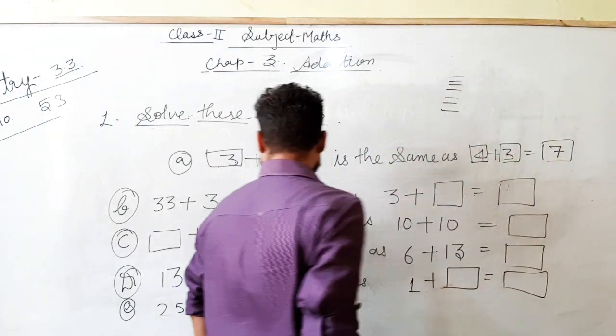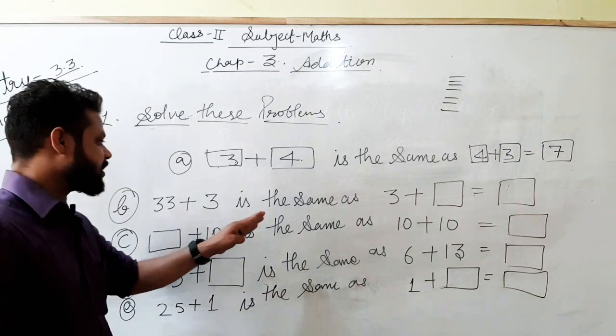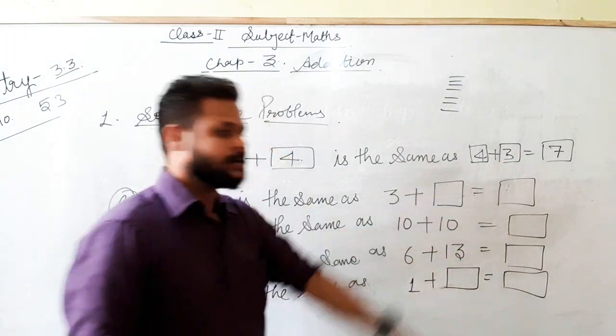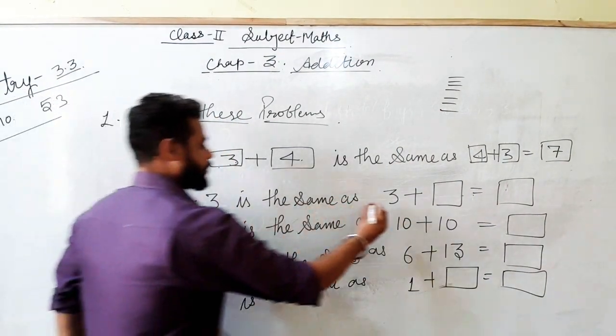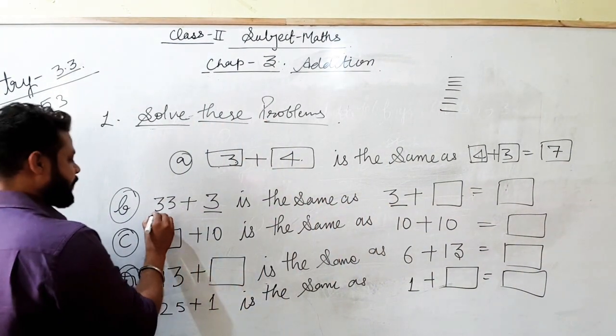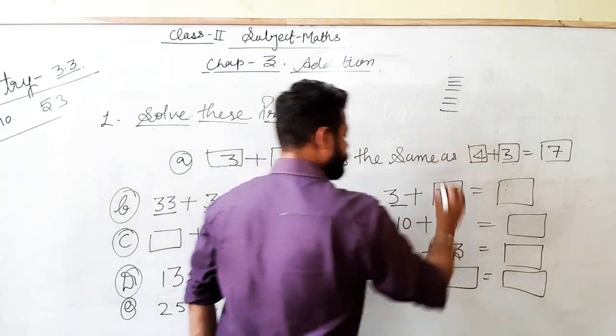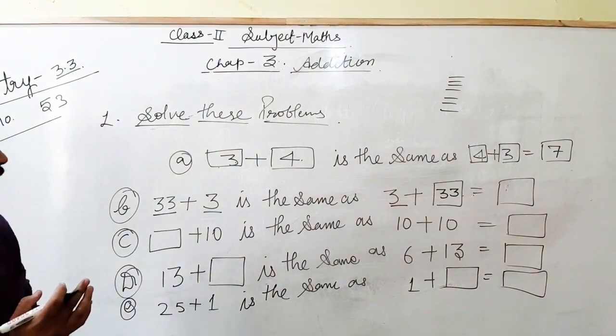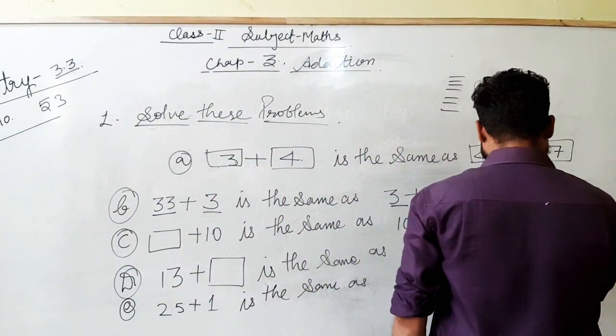is the same as 3 plus. Now, question number B. 33 plus 3 is the same as 3 plus. Plus, abh yhaan pe kya hona achi hai? Dekho, bhai ye toh yhaan pe a gaya, hai na? Abh yha khaan pe a jayega? Yhaan pe. Yes or no? A jayega na? Toh yhe 33 plus 3 kitnay ho jayenghe? 36.